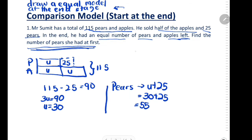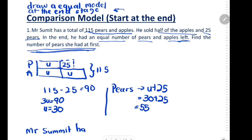So Mr. Sumit had 55 pears at first. I hope you understand the comparison model start at the end.